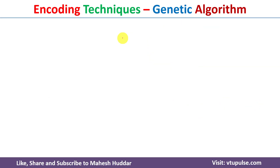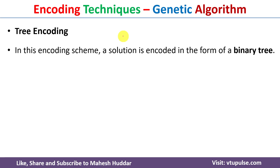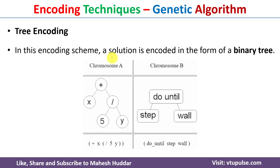The last encoding technique is tree encoding. In this scheme, a solution is encoded in the form of a binary tree. Chromosome A contains a binary tree, and chromosome B is also in the form of a binary tree. In the first case, an equation is encoded as a binary tree; in the second case, a looping construct is encoded as a binary tree. This is how we can encode the potential solution in the form of a binary tree.